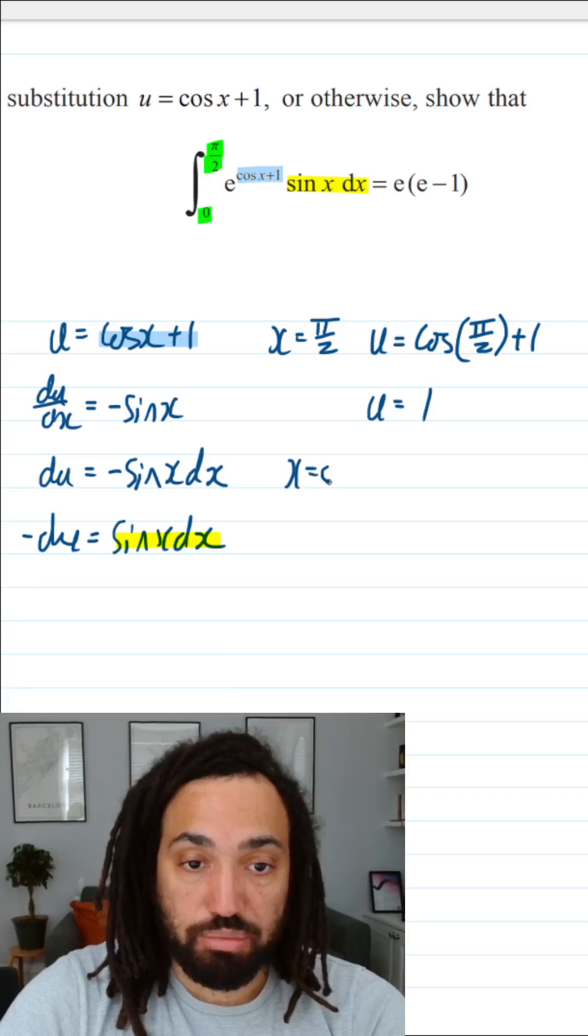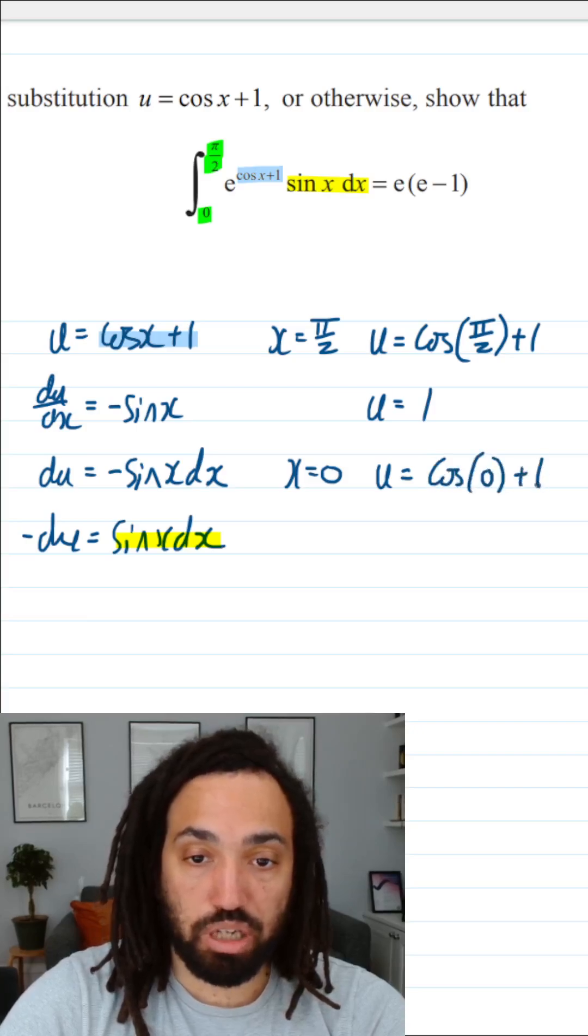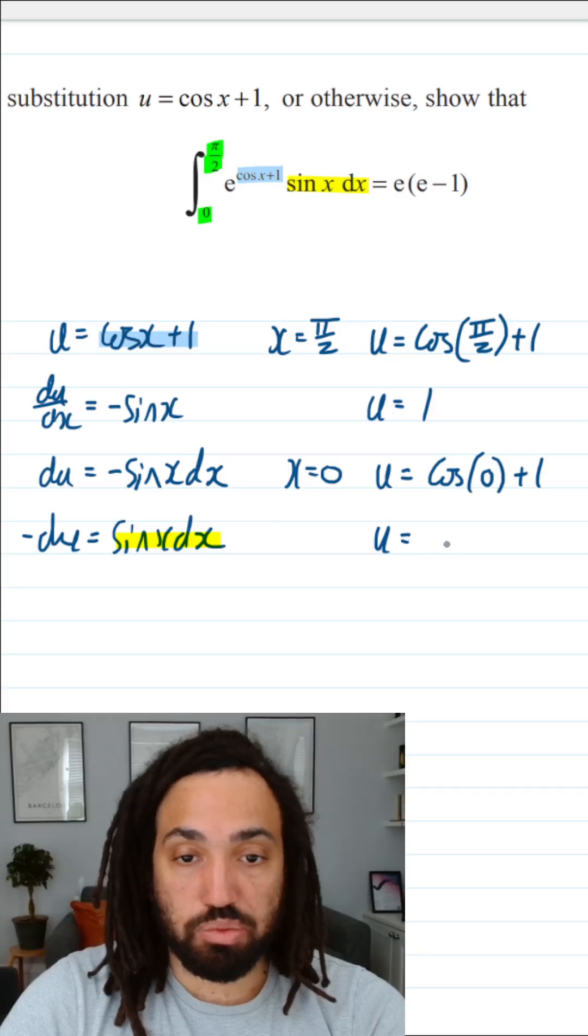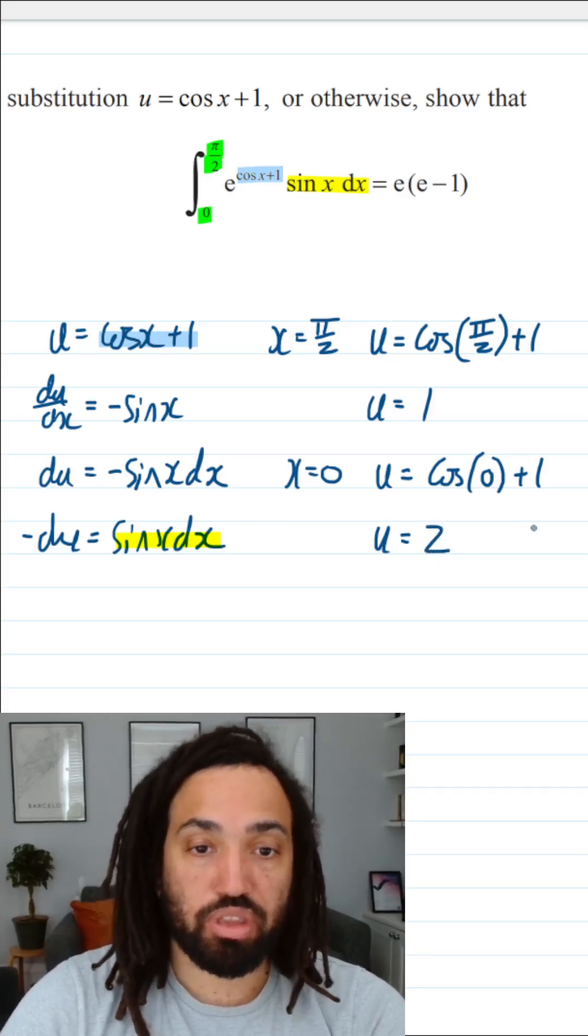And then let's do the lower limit. So x equals 0, u equals cos of 0 plus 1, and cos of 0 is 1, so 1 plus 1 is 2.